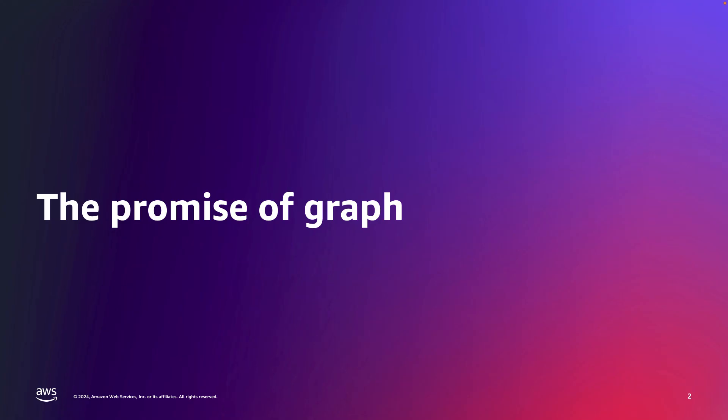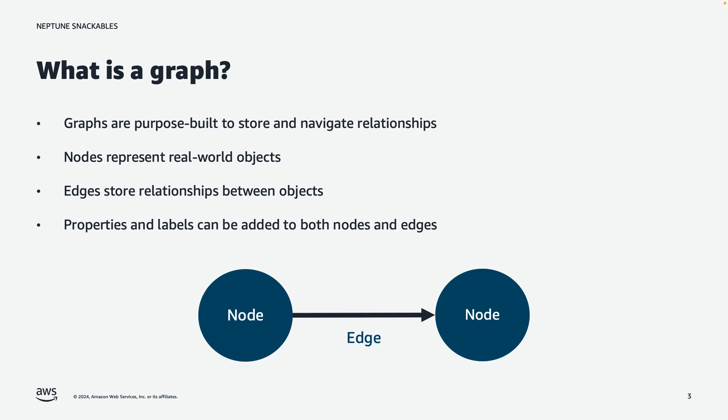What draws you to graph in the first place is the promise of graph. Even if you're new to graph, you know that the basic building blocks of a graph are nodes and edges. Nodes, shown here as circles, represent real-world objects. And edges, shown here as arrows, represent relationships between objects. A graph is basically about modeling data in this form so that you can navigate those relationships.